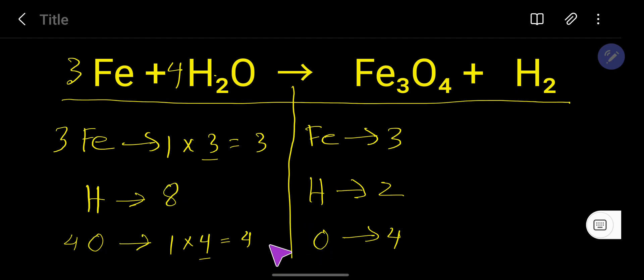Now in the right-hand side you are getting only two hydrogen. So to balance hydrogen, you can multiply here by four, that gives us eight. So this four will come before this hydrogen, that is here. So eight hydrogen, eight hydrogen.